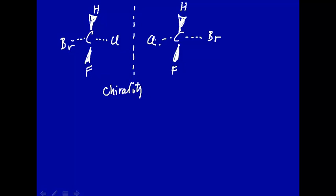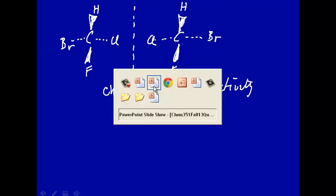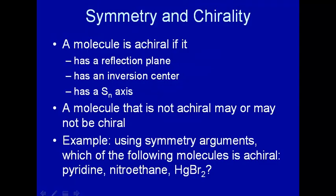The mirror image is not superimposable on the original image, and chiral compounds give rise to optical activity. A molecule cannot be chiral — that's called achiral — if it has a reflection plane.